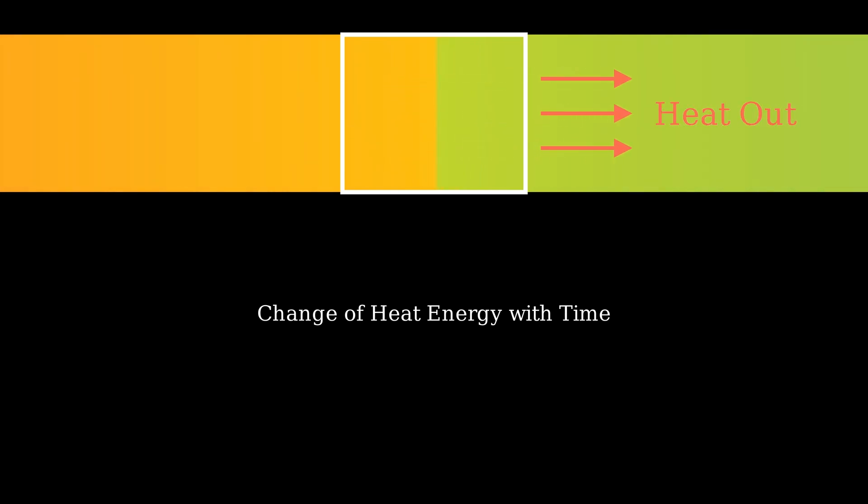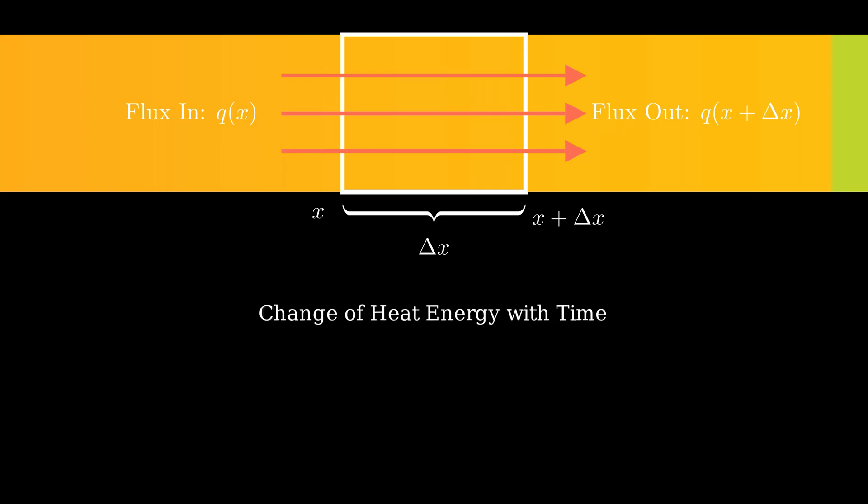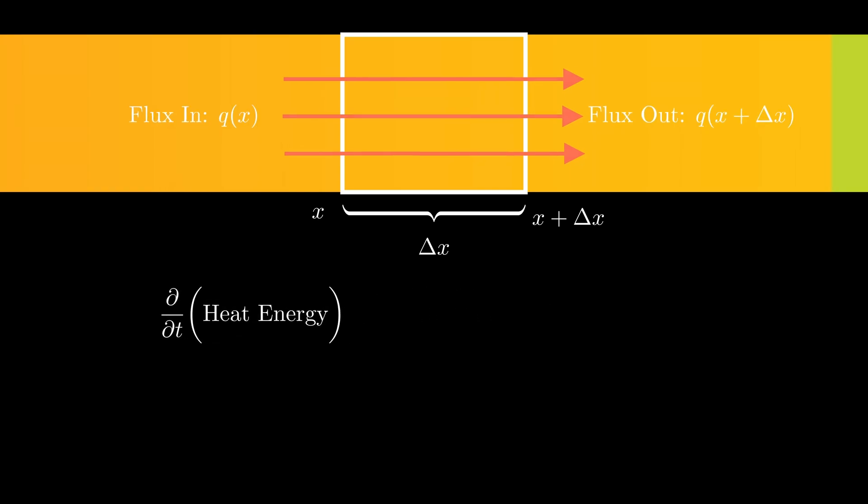Notice how over time, the cooler parts of the rod are getting warmer and the temperature is spread out over the whole length. In summary, the heat enters the segment at a location say x and exits at x plus delta x. I can denote these values as qx and qx plus delta x respectively, which is also known as flux. The rate of change of heat energy then is just the difference between these two terms.